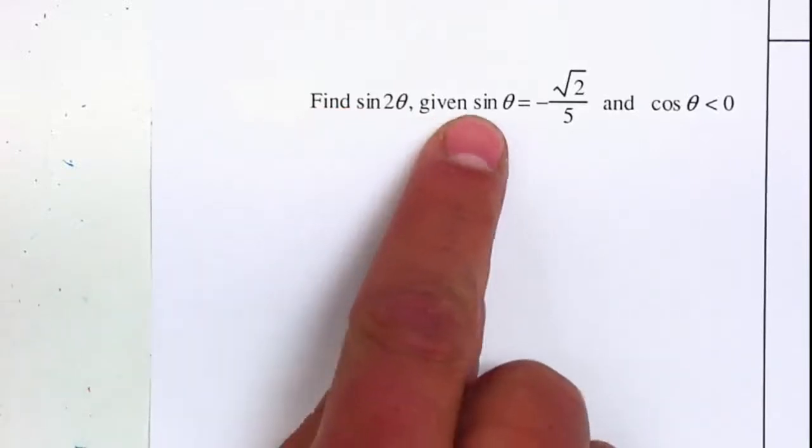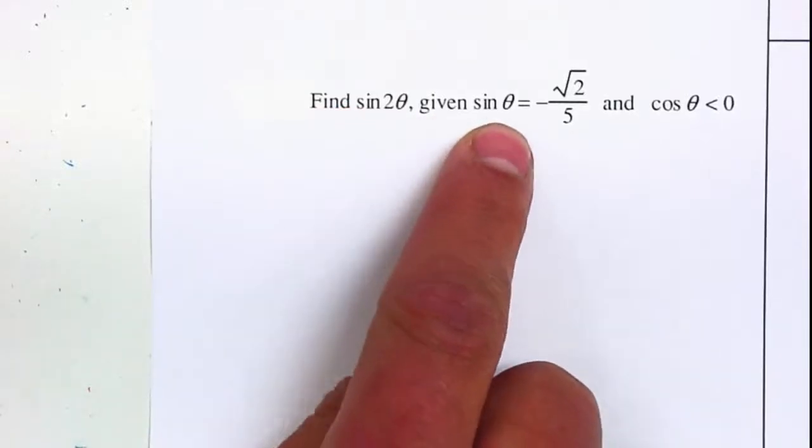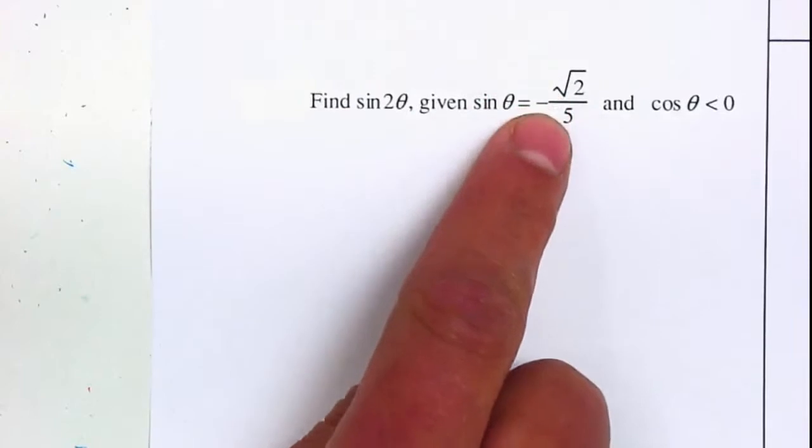Find sine of 2θ given that the sine of θ is negative square root of 2 over 5.